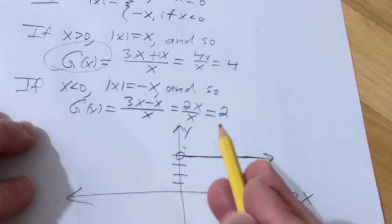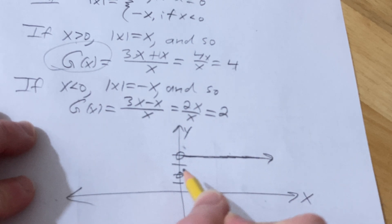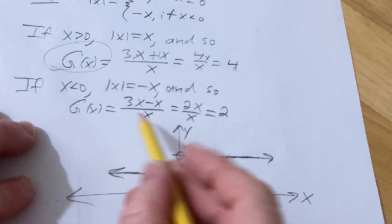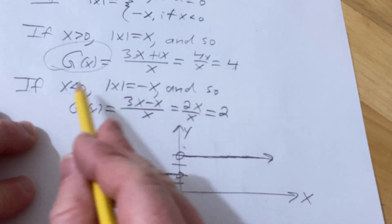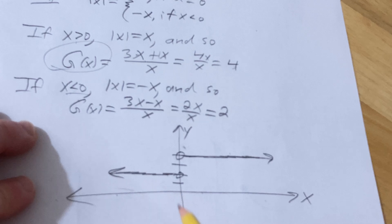For x less than 0, the y value is 2. We don't include the 0 because it's less than, there's no equal to part. So for all x less than 0, it's 2. That's the graph of the function.